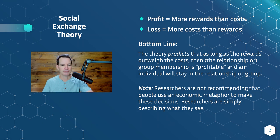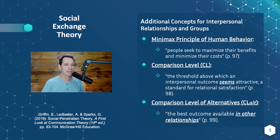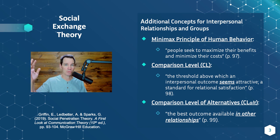There are some additional concepts from M. Griffin's book, A First Look at Communication Theory. The first is the minimax principle of human behavior: as people, we seek to maximize benefits and minimize our costs. As we go about our day, we're looking for the highest possible rewards and the lowest possible costs.